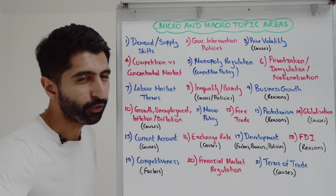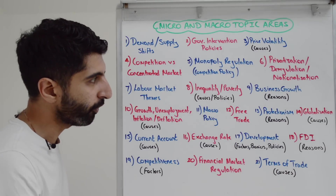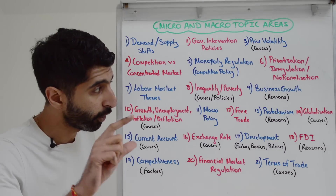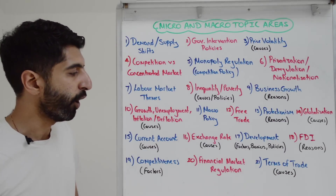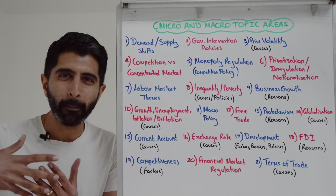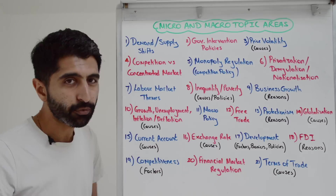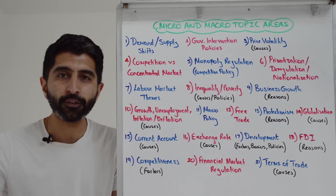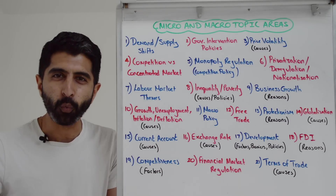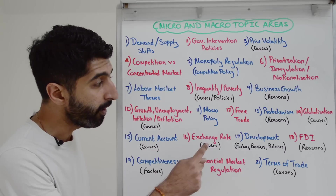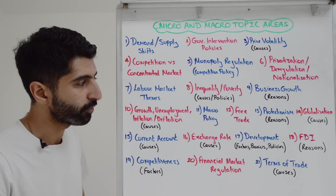Same for free trade, same for protectionism — the effects but also the reasons for protectionism could be micro or macro in nature. Same for globalization — the effects but also the causes of globalization. Current account will mainly be the micro/macro causes of it. Exchange rate — the effects of a depreciation or appreciation, more generally a weaker or stronger exchange rate, but also causes of a weaker or stronger exchange rate.